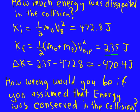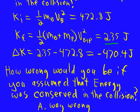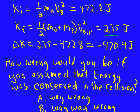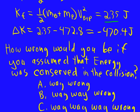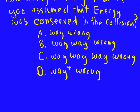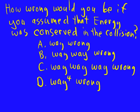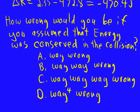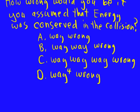How wrong would you be if you assumed that energy was conserved in the collision? A, way wrong. B, way way wrong. C, way way way wrong. And we know the answer is D, way to the fourth wrong. Energy was almost all dissipated in this collision. So always do momentum first.